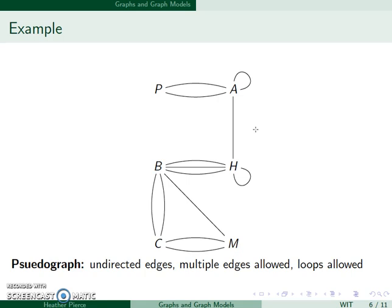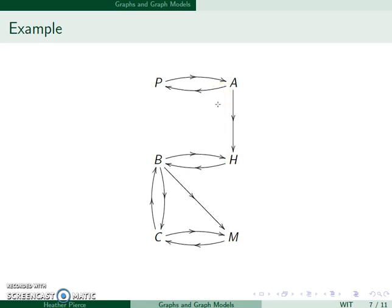We also will have directed graphs. For instance, I know there is a flight between Augusta and Hartford, but which way does it go? Does it start at Augusta and land at Hartford, or does it go the other way around? We can add in arrows to indicate directions of these particular flights.